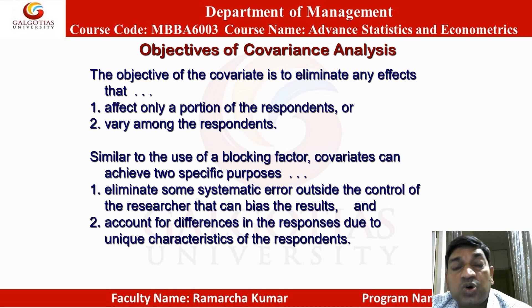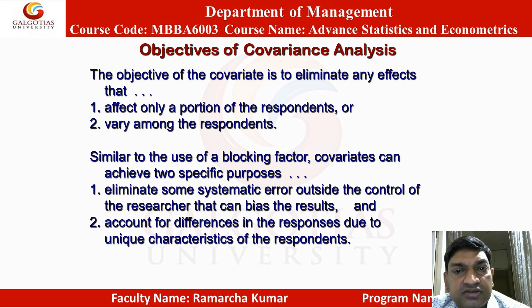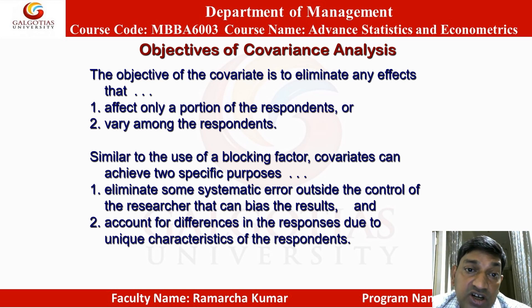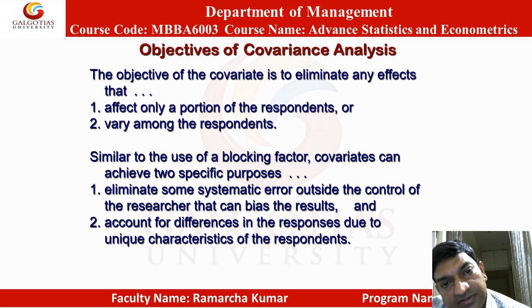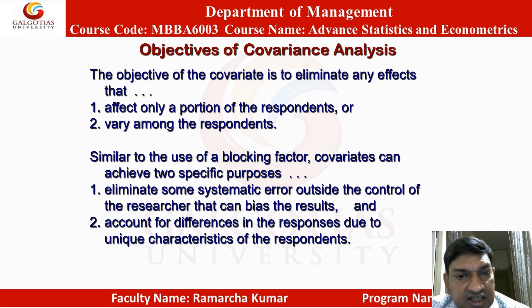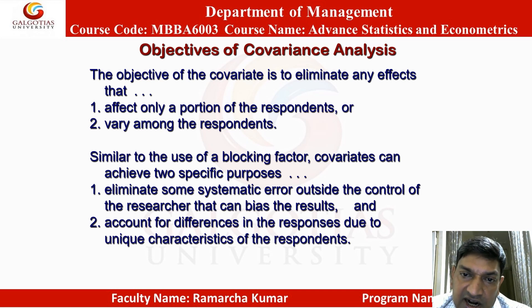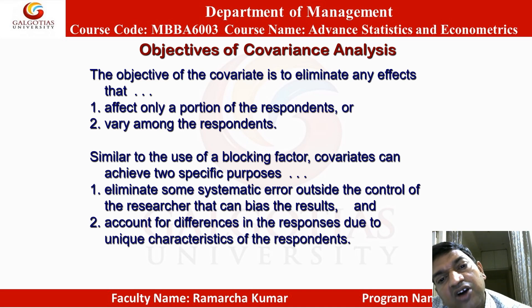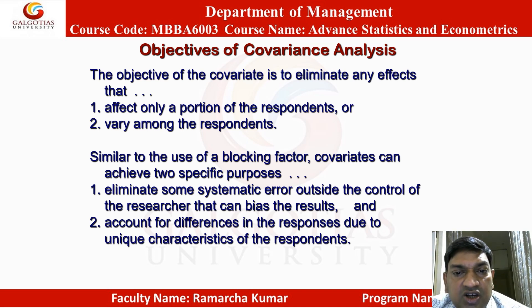Objective of covariance analysis: the objective of a covariate is to eliminate any effects that affect only a portion of the respondents or vary among respondents. Similar to a blocking factor, covariates can achieve two purposes: eliminating systematic error outside the researcher's control that can bias results, and accounting for differences in responses due to unique characteristics of respondents.